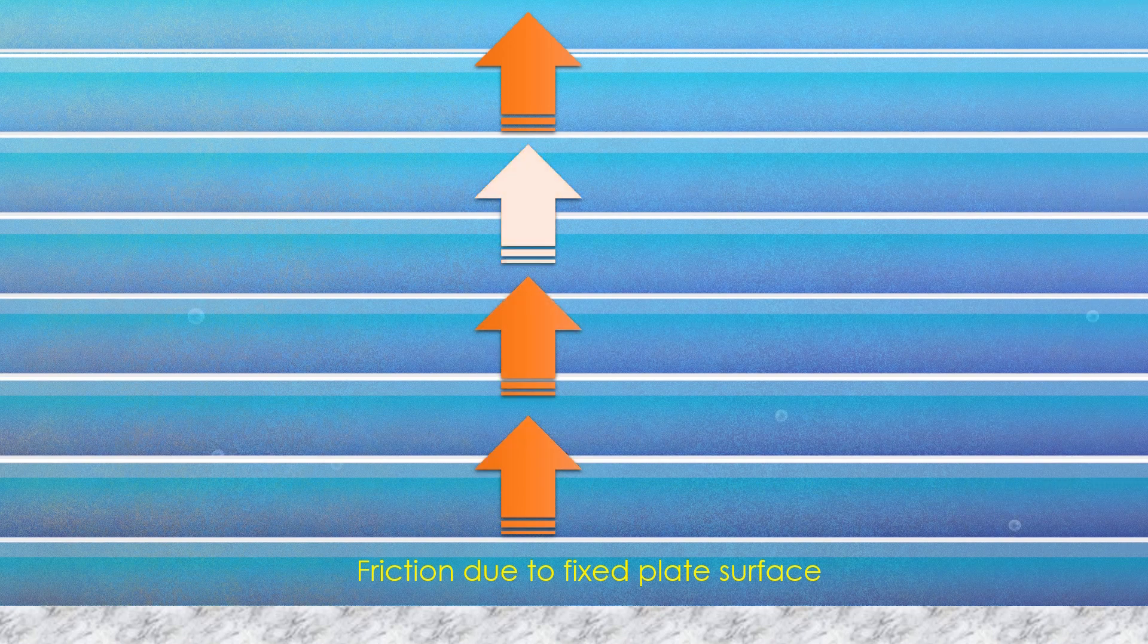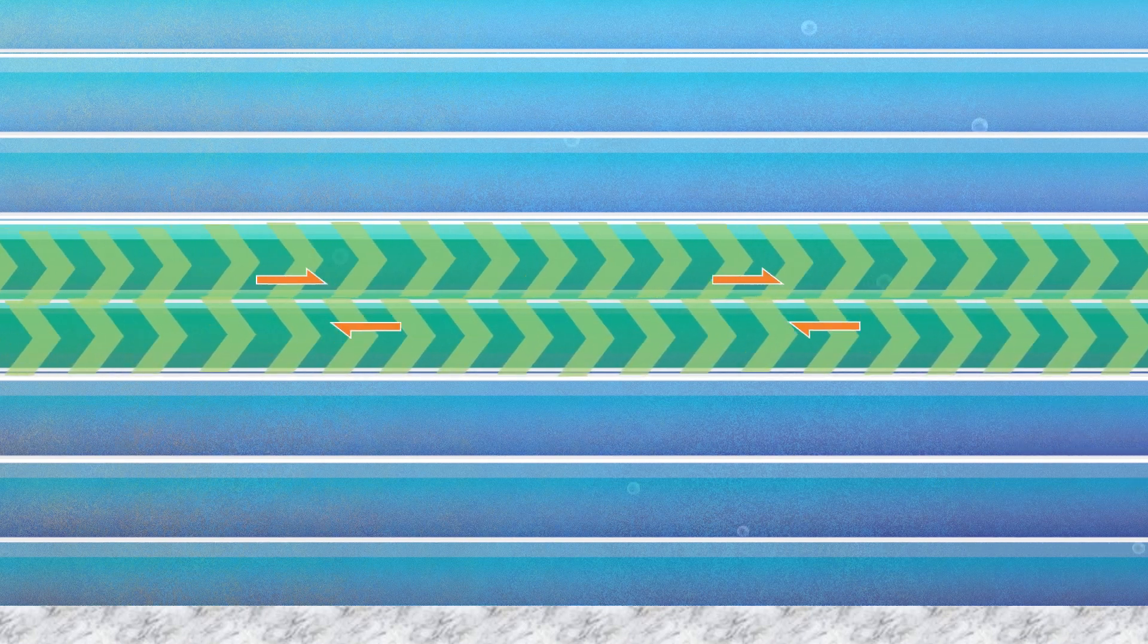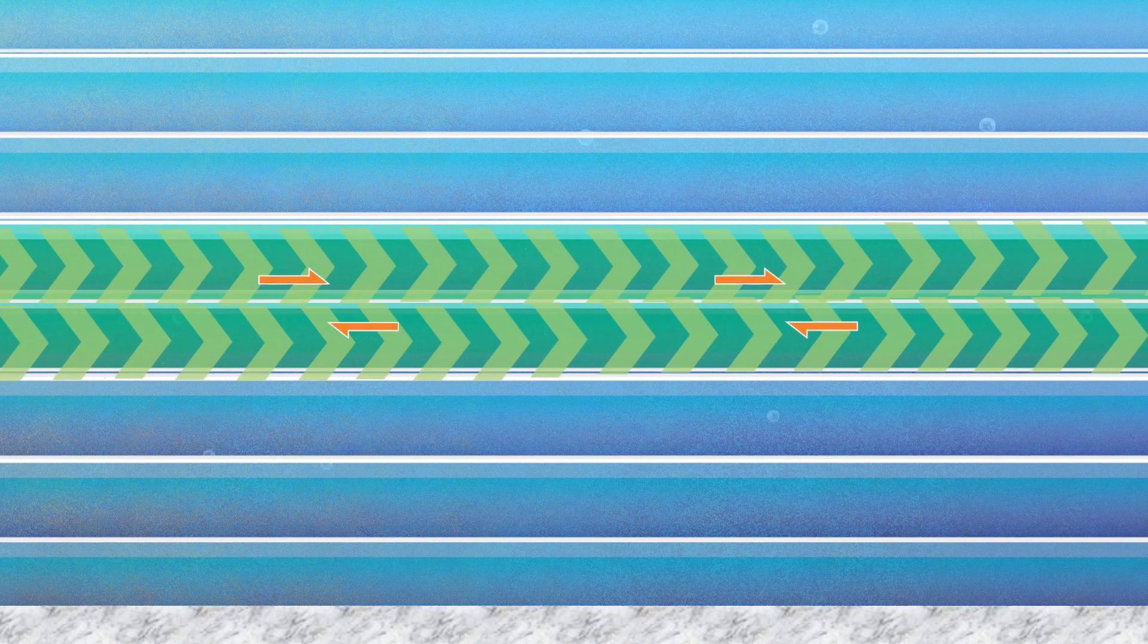This is known as wall effect. As we move away from the plate surface, the friction effect will decrease and will be the least at the top layer of the fluid. Since the fluid layers are moving at different velocities, a shear stress develops between them.